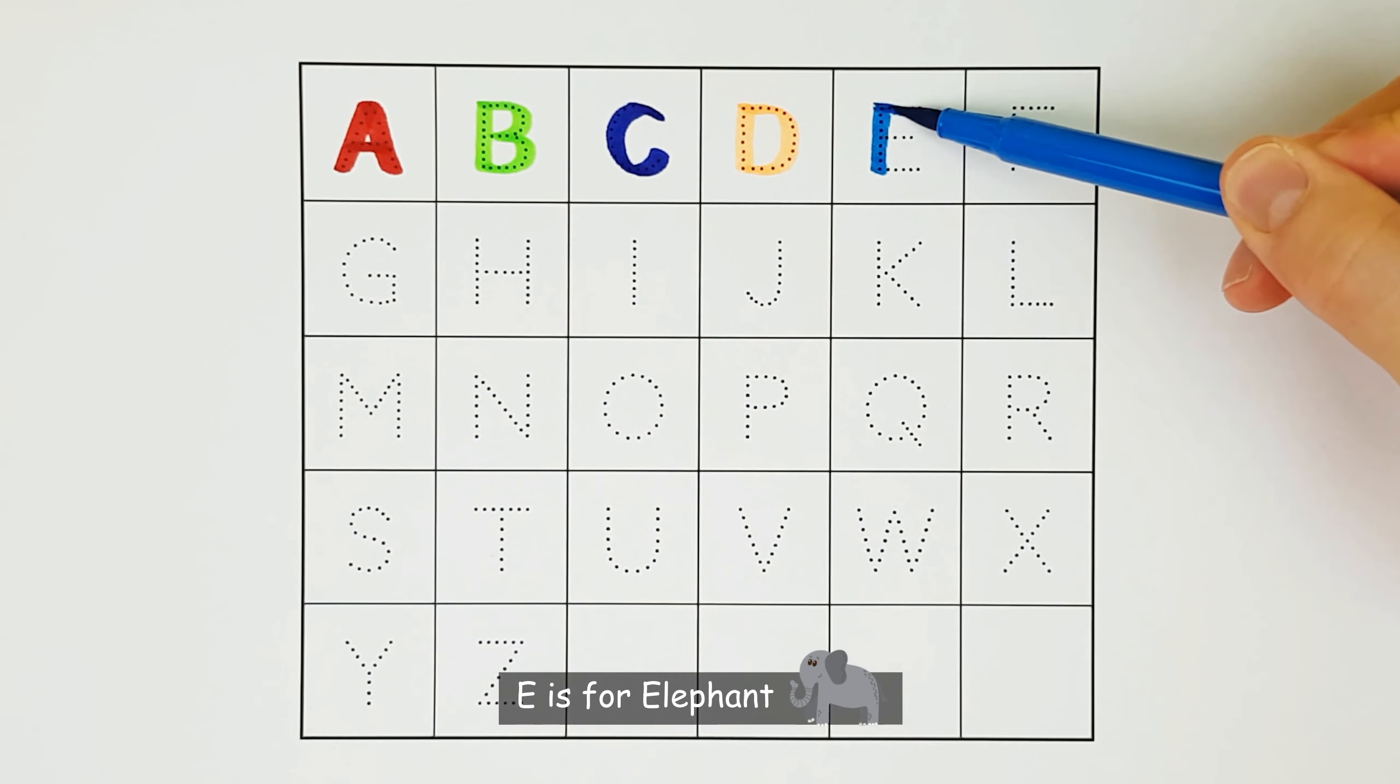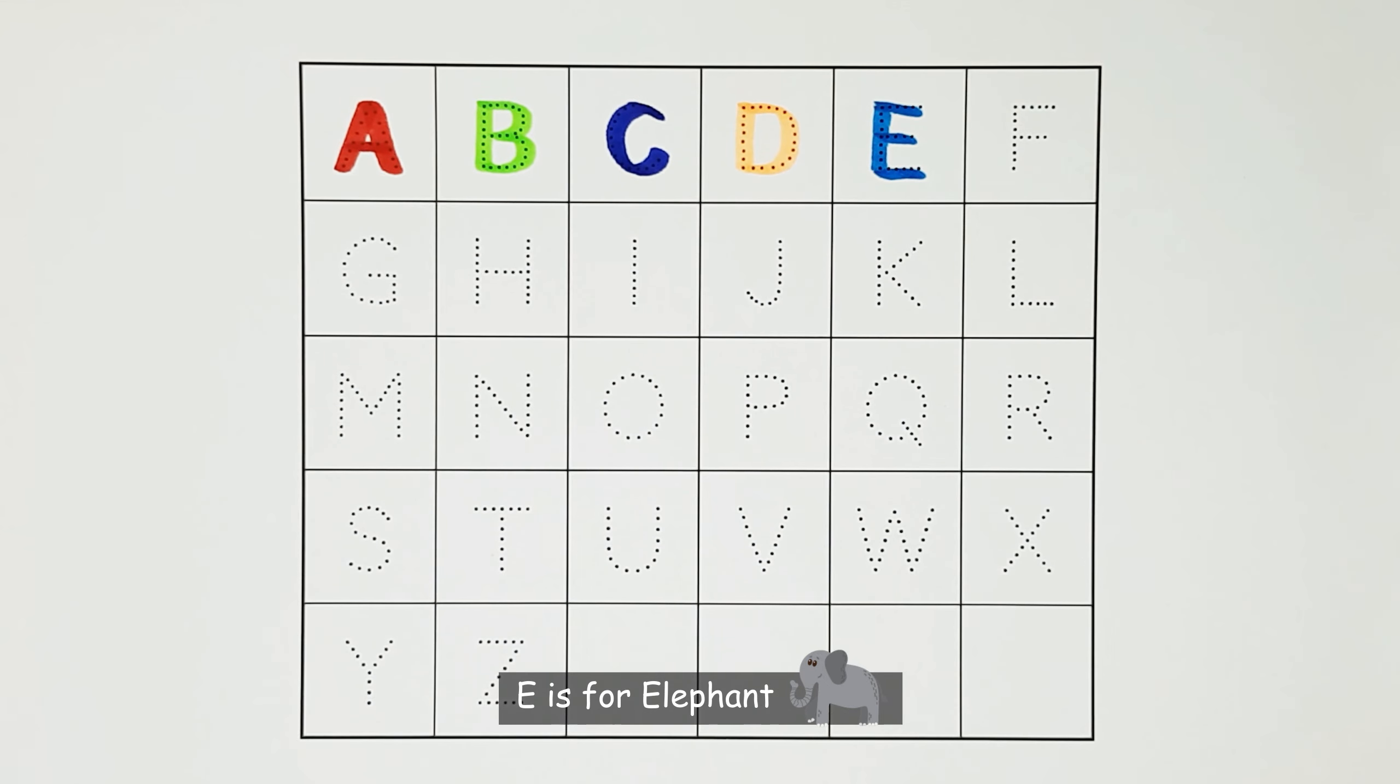E. E is for elephant. E. F. F is for flamingo. F.